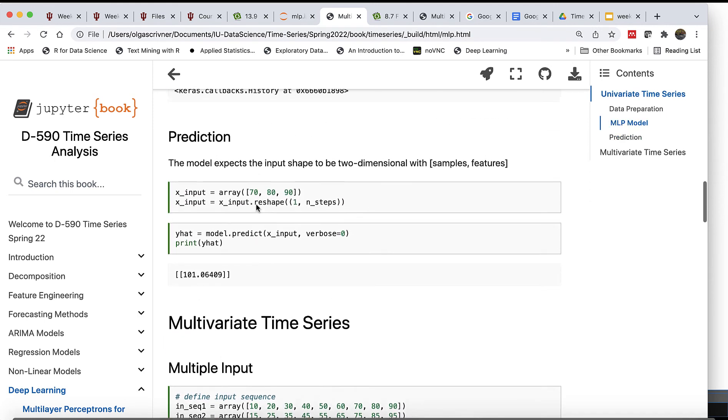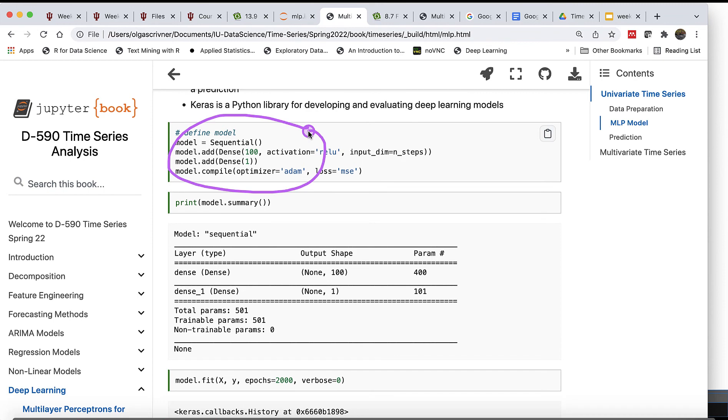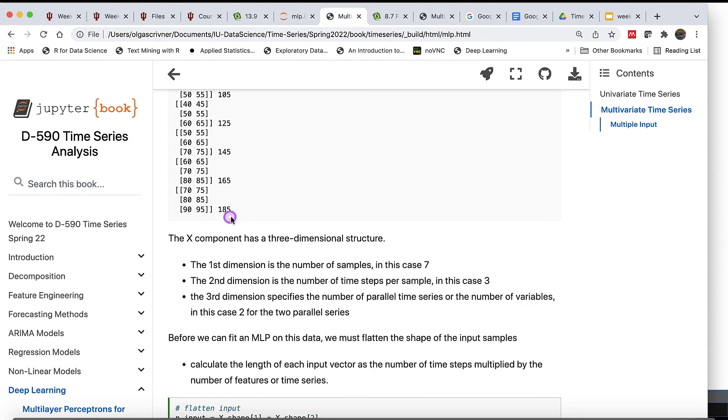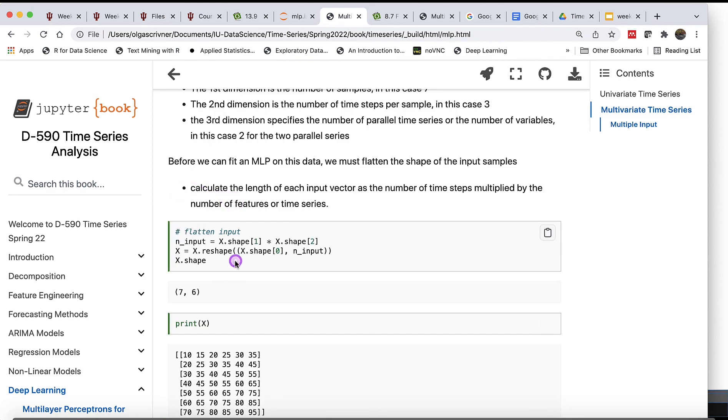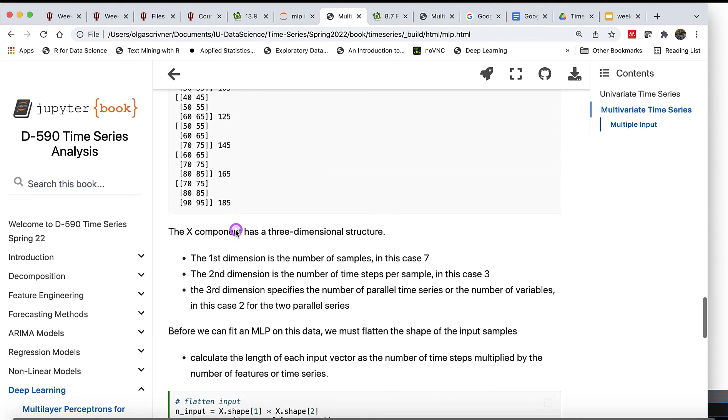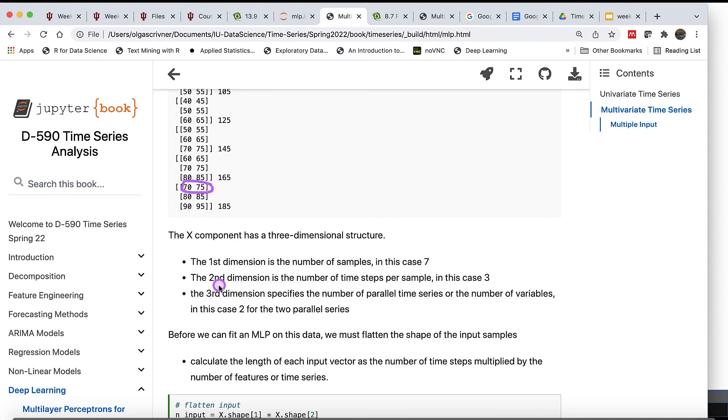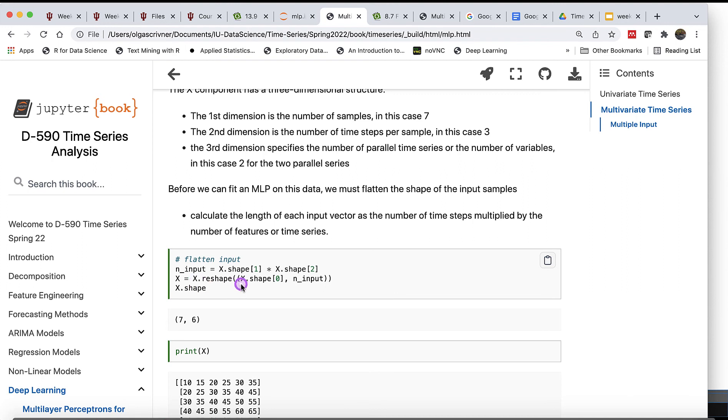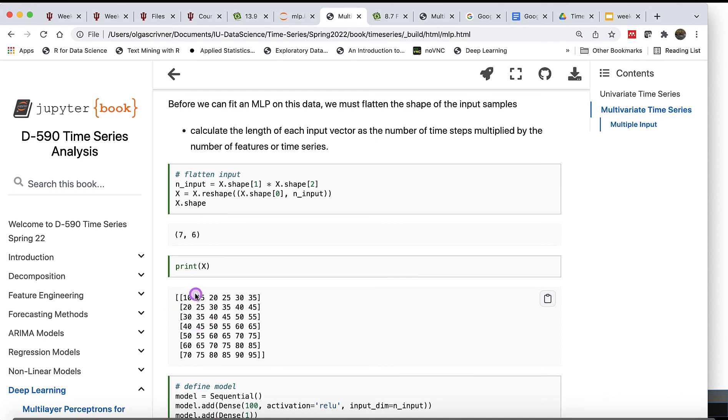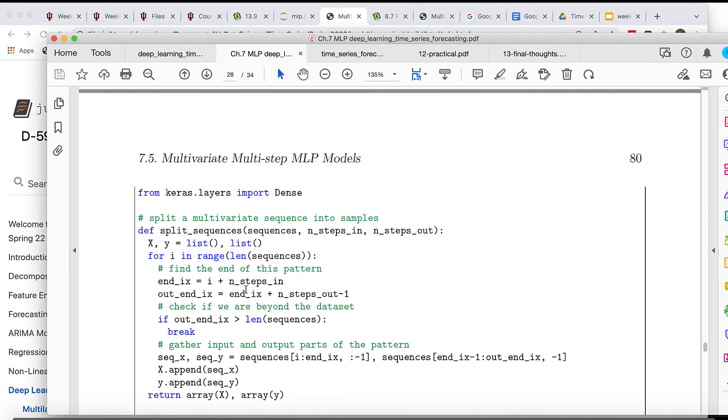We can fit the same model; we don't need to change any parameters. What differs in this case is our input structure. We have to flatten our input, which now is represented as an array. We can follow this example where we multiply the shape, three multiply by two gives us six. When we reshape our features with seven, which is our initial shape, and now adding this new calculated input, which is six, the shape of our new data structure will be seven by six. So we have seven samples with six rows. This is going to be our input for the model.